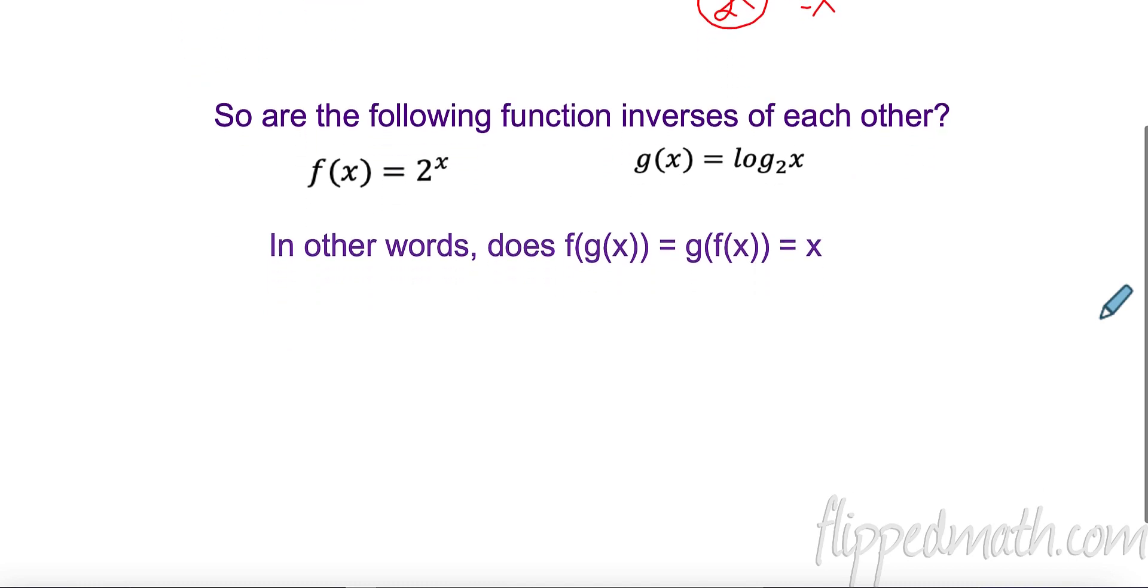So are the following inverses of each other? If I put one into the other, does it equal X? So let's do F of G of X. I'm going to put G of X in here. So that means two to the X, but that now is G of X. I'm putting all of this into it. So two to the log two of X. And we just showed you that when that's true, all of this cancels and I'm left with what's left here, which is just X. Let's try putting this one into that one. So I have log two of, what am I putting in? Two to the X. And we learned that these undo each other because the bases are the same. And what's left, this exponent. So F of G of X gives me X. G of F of X gives me X. And it is X. That means, yes, they are truly inverses.